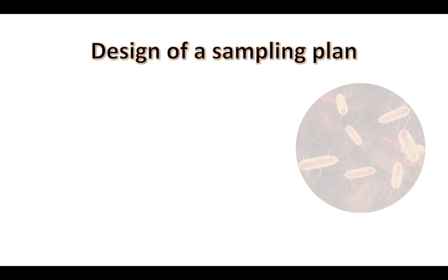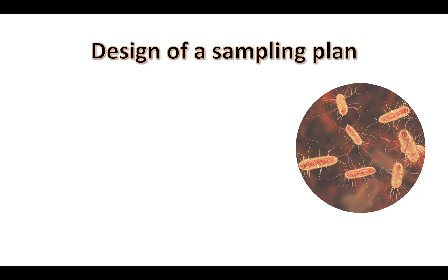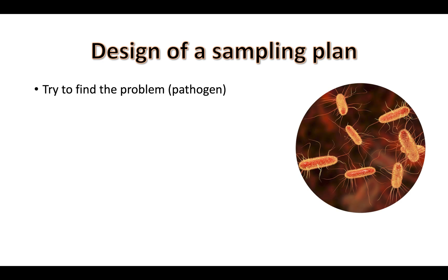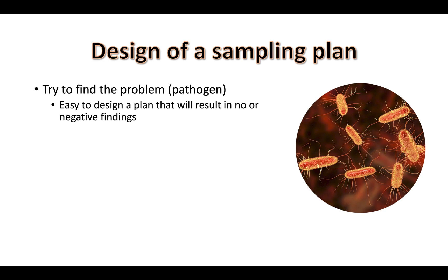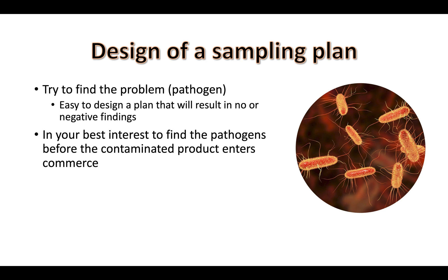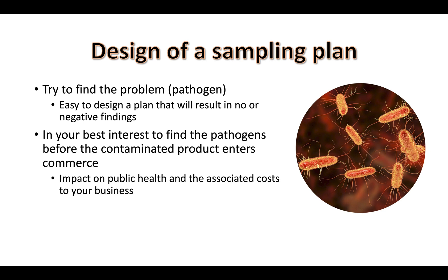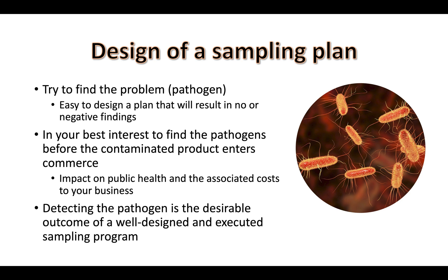A processor needs to think critically when designing a sampling plan. An effective sampling plan is one that tries to find the problem — a pathogen. It is very easy to design a microbial sampling plan that will never find a pathogen in your product. It is in your best interest to catch contaminated product before it enters commerce. No one wants to put others at risk, and outbreaks can have long-lasting impacts on your business. Many smaller-scale processors have been put out of business due to an outbreak. The take-home is to try to find the problem and correct the issues internally before any product enters commerce.